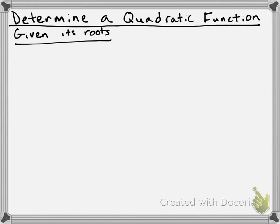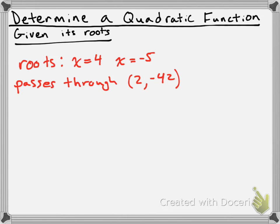Hey everyone. In this video I'm going to show you how to determine the equation of a quadratic function given its roots. So let's take a look at an example. Let's say that a quadratic function has roots at x equals 4 and x equals negative 5 — those are basically the x-intercepts. And let's also say that it passes through the point (2, negative 42). So I've got two roots and a point that this particular quadratic function passes through.